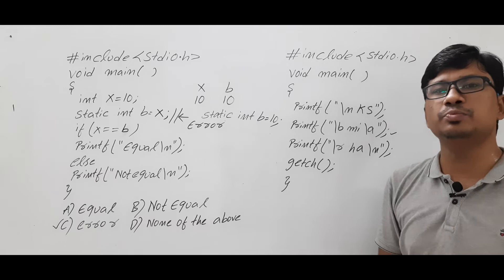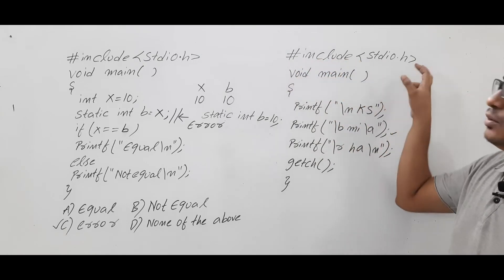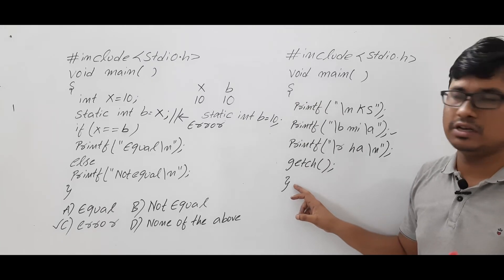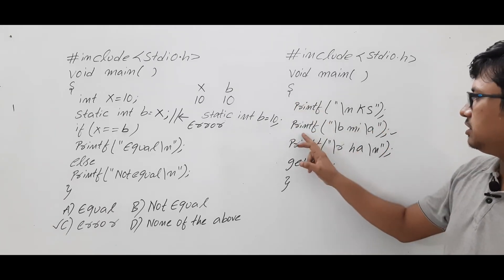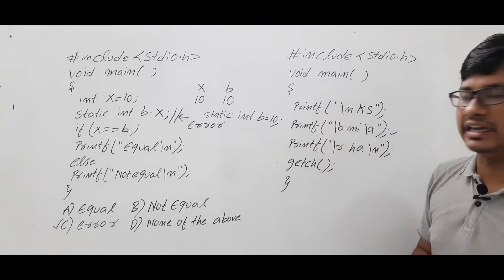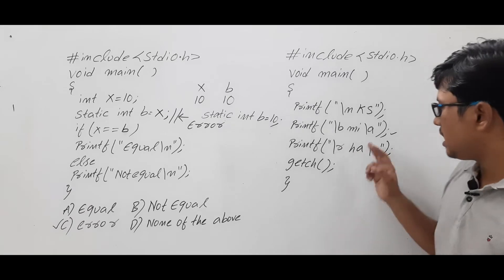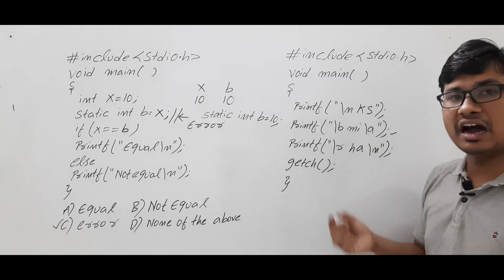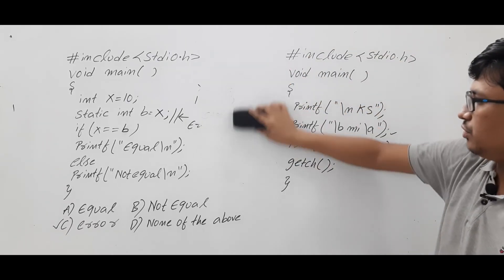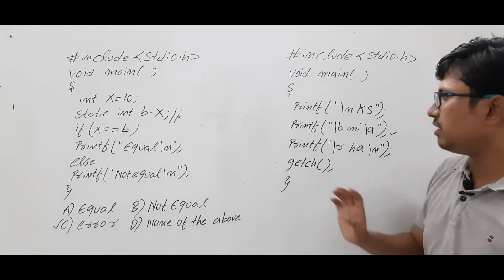If you execute this program, what will be the output? '#include stdio.h' is correct, 'void main' is correct, curly braces are correct, the printf spellings are correct, and 'getch' is correct. Now look at the escape characters used: '\n' is newline, '\b' is backspace, '\a' is alarm (bell sound), '\r' is carriage return. If you know the escape characters, you can easily solve this question.